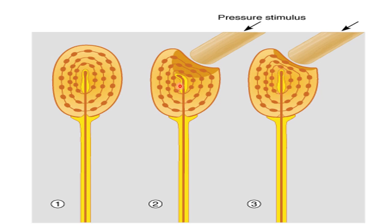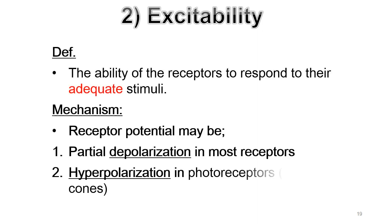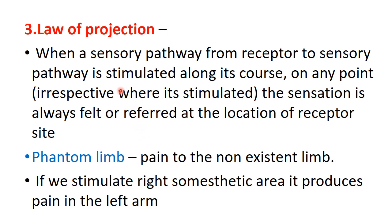The law of projection states that each sensory pathway originates from the receptor and relays to the cerebral cortex. When a sensory pathway is stimulated at any point along its course, the sensation is always felt at the location of the receptor site — not at the point of stimulation. For example, when there is a pinprick, you feel pain on the surface of the skin, not at the cerebral cortex. This is called the law of projection.